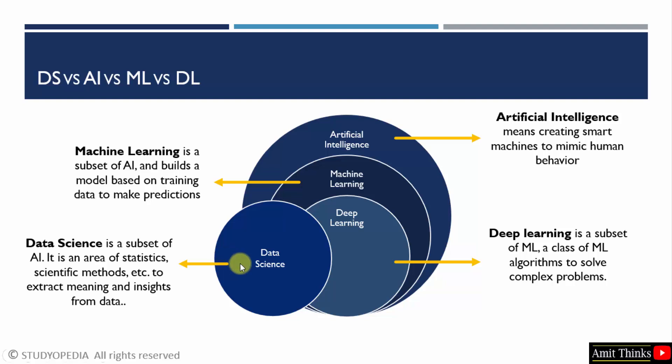The ecosystem of data science also exceeds AI. AI means creating smart machines to mimic human behavior — it refers to the simulation of human intelligence in machines that are programmed to think and learn like humans. You must have seen AI in many domains these days because it can easily analyze large amounts of data, recognize patterns, and make decisions.